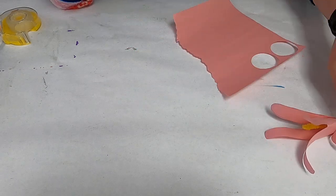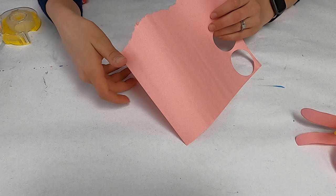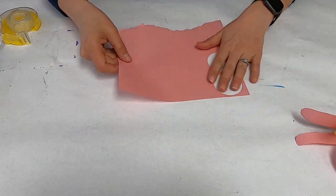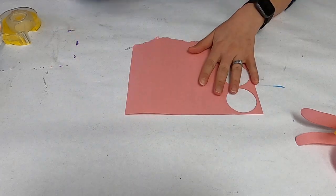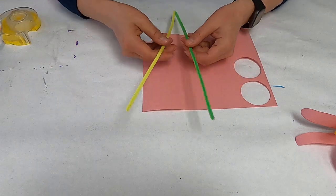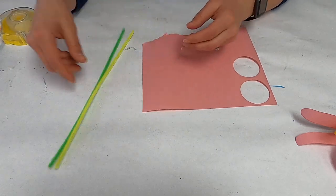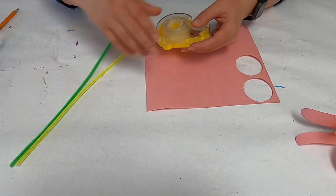For these, what you need is some construction paper. I just chose pink for this because I had some pinks laying around. You can choose any color that you want. You need some pipe cleaners, green and yellow, some tape and some scissors, and then something to trace with.